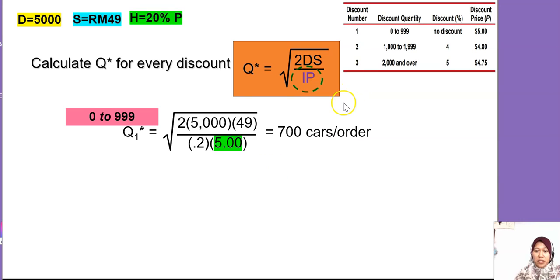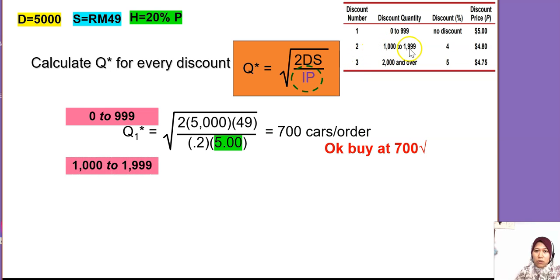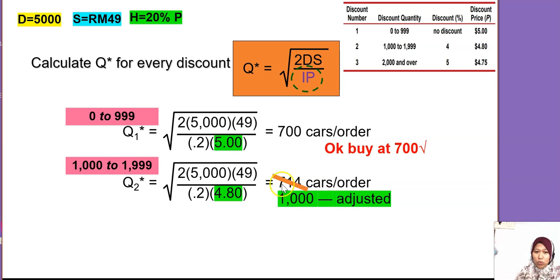When you finish calculating, check whether Q is within the range. Yes, 700 is between 0 and 999, so we decide to buy at 700 for the first discount. Then we calculate for the second discount, range 1000 to 1999. The price is 4 ringgit 80 cent, so we recalculate Q and get approximately 714. Checking the range — it's not within 1000 to 1999, so we adjust to the minimum value of the range: 1,000.